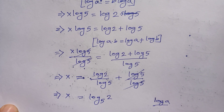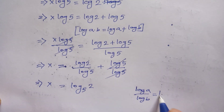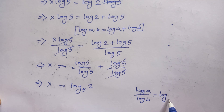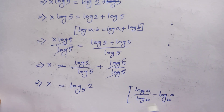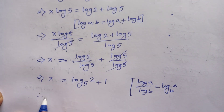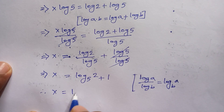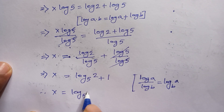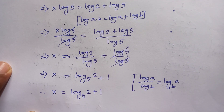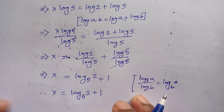According to the formula: log a over log b is equal to log base b of a. So we can write it here as log base 5 of 2, plus this divided by this is 1. Therefore the value of X is equal to log base 5 of 2 plus 1. This is the value of this equation.